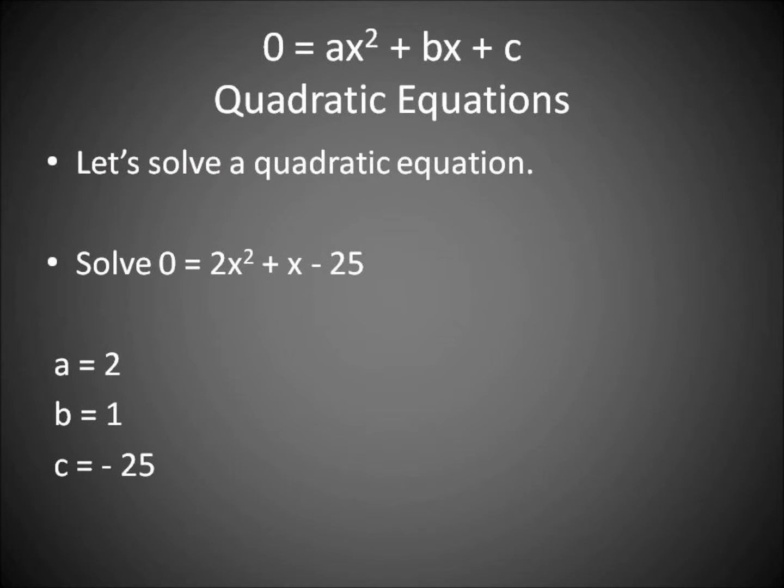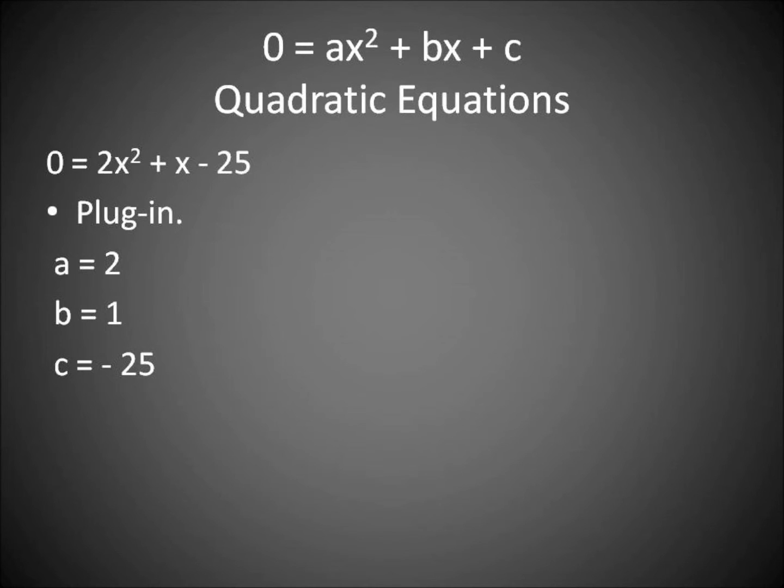Here you see a, b, and c plugged into the formula. We're going to have zero equals 2x squared plus x minus 25 as an example, where a equals 2, b equals 1, and c equals negative 25. All we do is plug in.